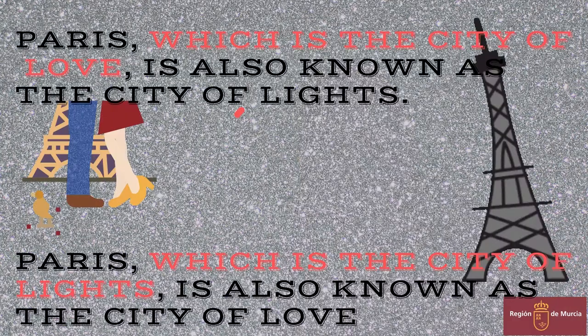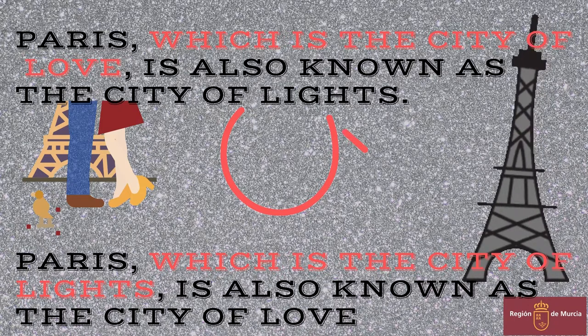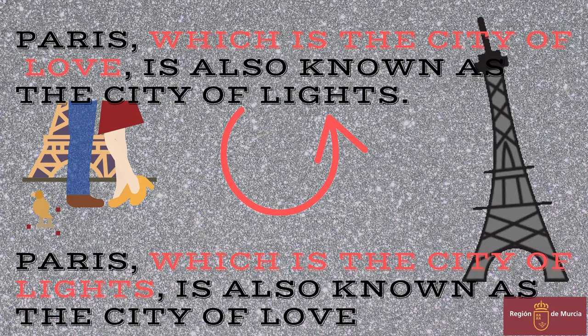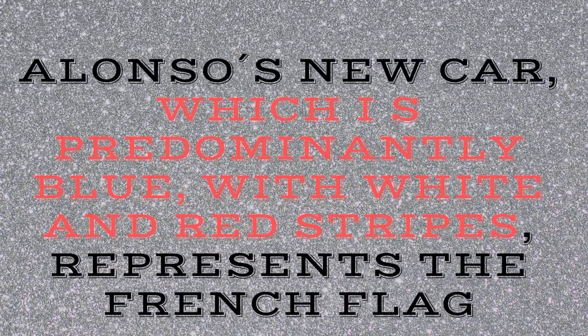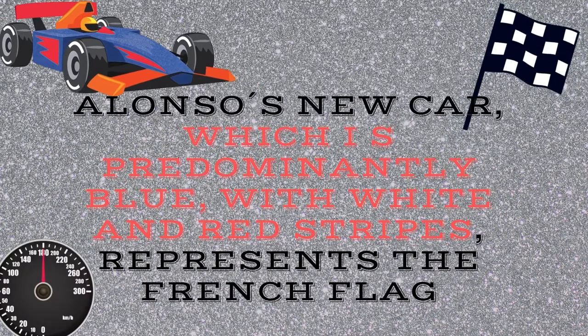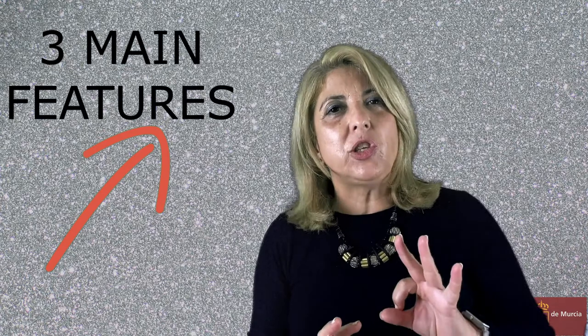For example: Paris, which is the city of lights, is also known as the city of love. Here you have another example: Alonso's new car, which is predominantly blue with white and red stripes, represents the French flag. The information about Alonso's car is between commas and is extra. So, if you don't mention that relative clause, the sentence would still have meaning.